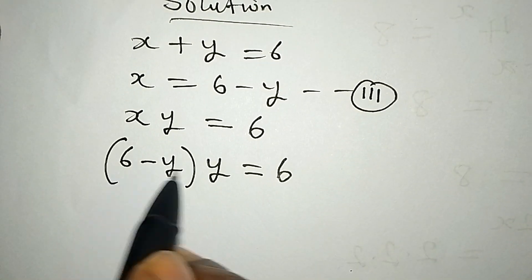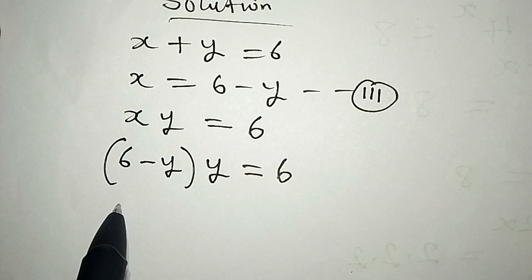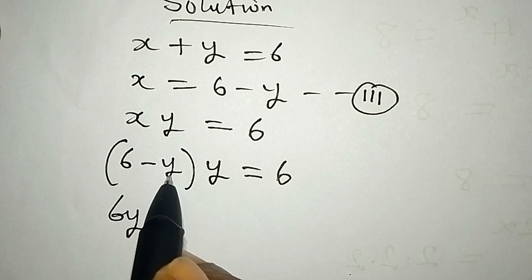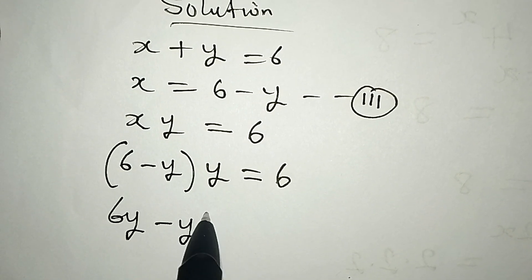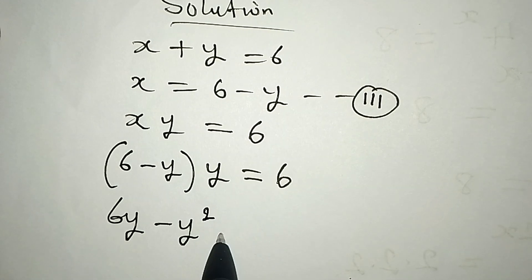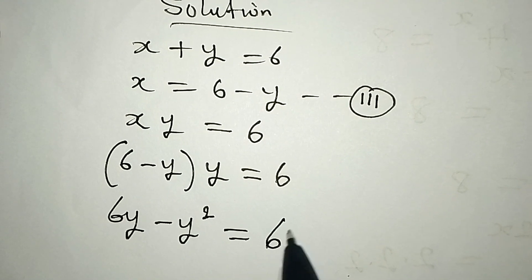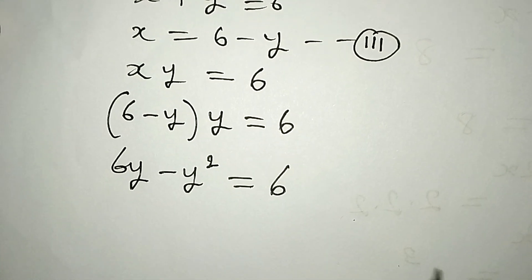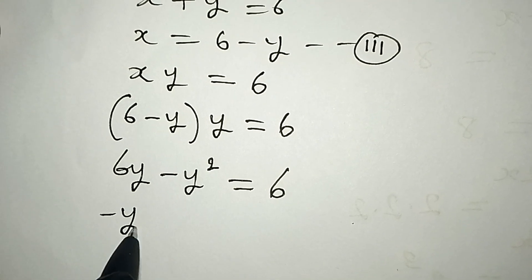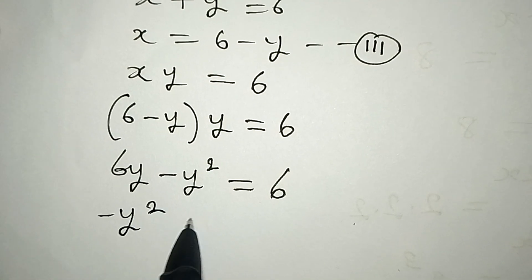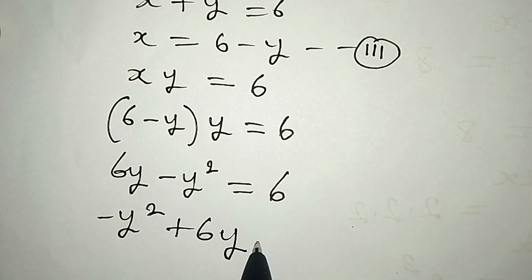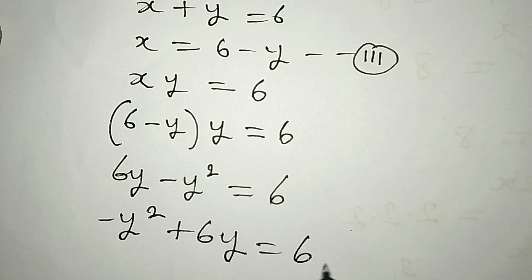Open the bracket: 6 times y gives 6y. Minus y times y gives y squared. And this is equal to 6. I can rearrange this so that we have minus y squared plus 6y equals 6.